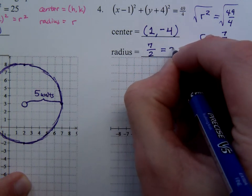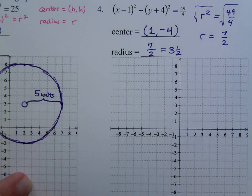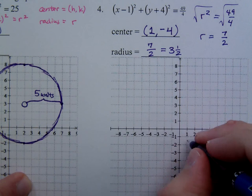If it makes you feel better, you can say this is 3 and a half. That's probably going to help you when it comes to plotting these points. So the center is at 1, negative 4, so down here.